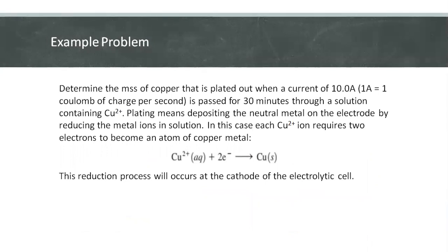We have an example. Determine the mass of copper that is plated out when a current of 10 amperes, wherein 1 ampere is equivalent to 1 coulomb of charge per second, has passed for 30 minutes through a solution containing Cu2+.